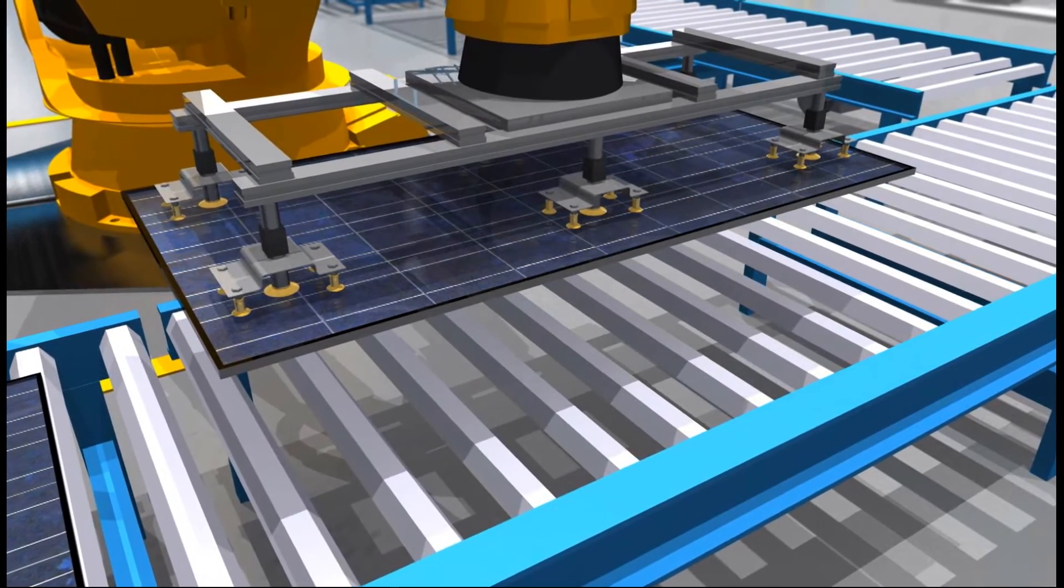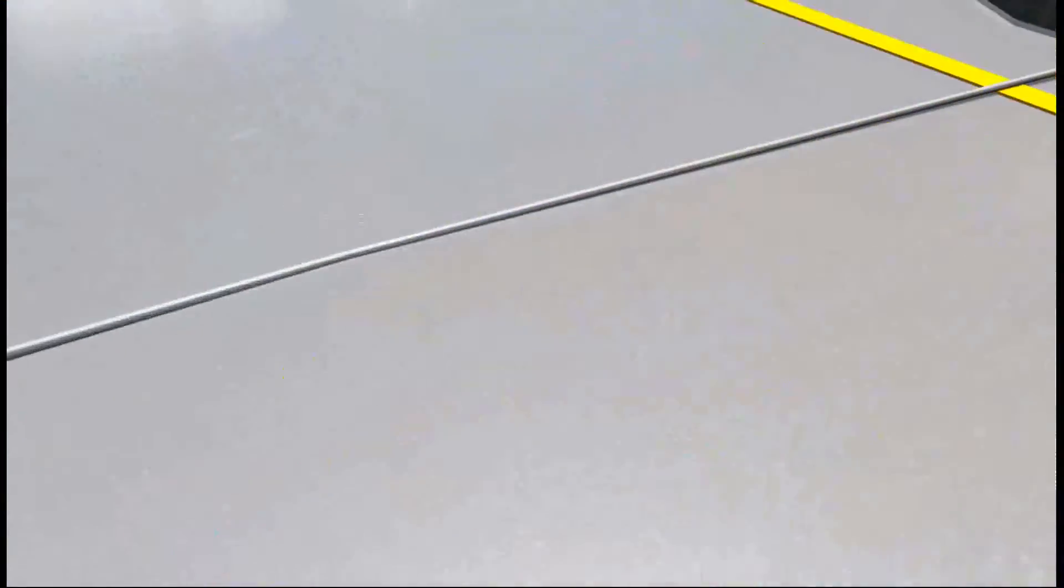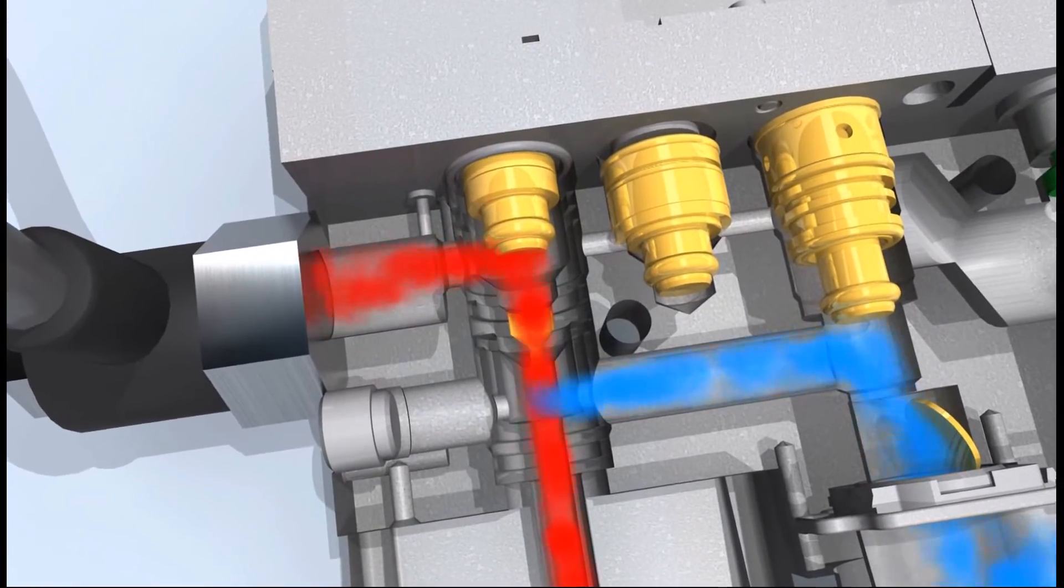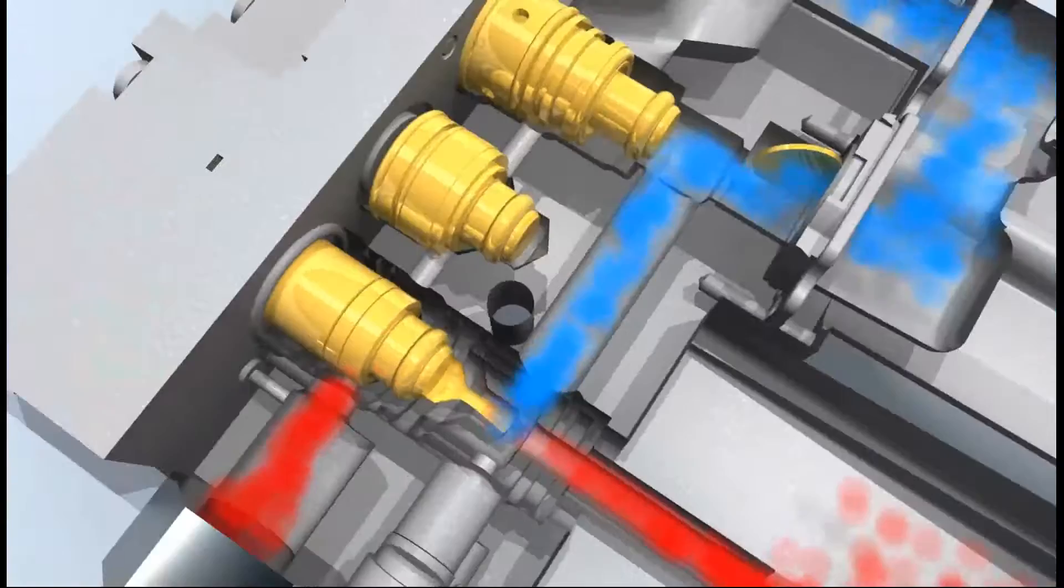If the pressure continues to sink, the stream of compressed air is interrupted by a valve, and a stop valve seals the area with the underpressure airtight.